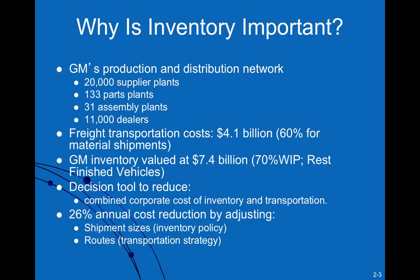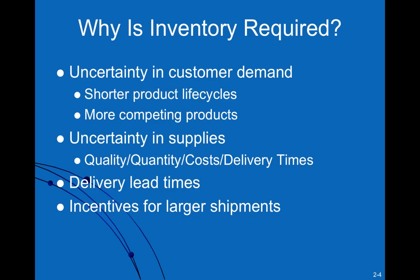GM's inventory is 7.4 billion dollars, so it's important that we find ways to reduce the cost associated with inventory. One approach is to reduce the size of shipments, which could cut costs by up to about 26 percent. Additionally, by changing the transportation and logistics routes, you might find efficiencies that lead to significant savings as well. We'll explore some of these strategies a little bit later.